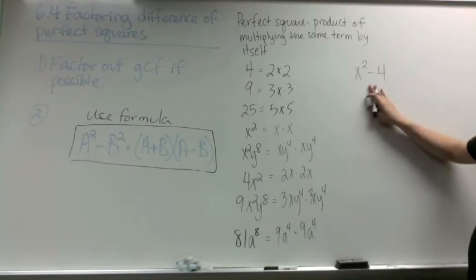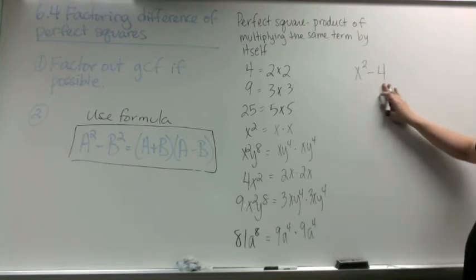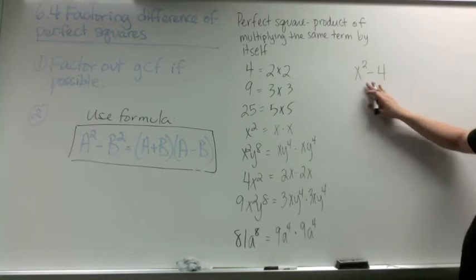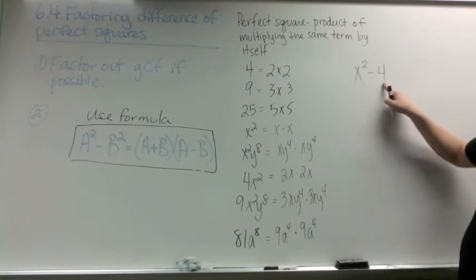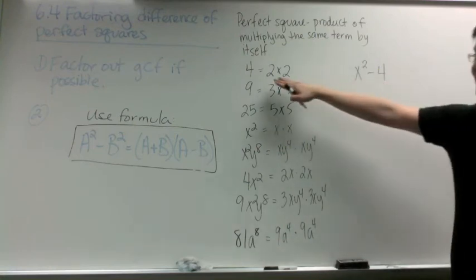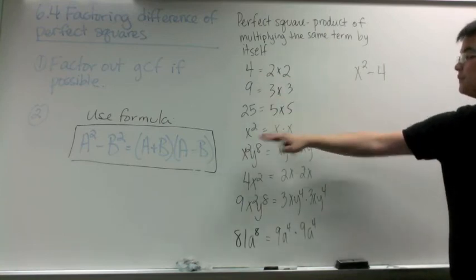In our first example, x squared minus 4, let's look at what kind of expression we have. The reason why I know this is a difference of perfect squares is because we have a minus sign, which represents a difference, and x squared and 4 are both perfect squares as we have seen.